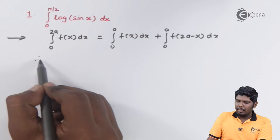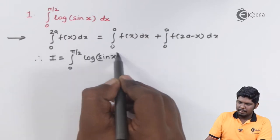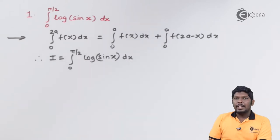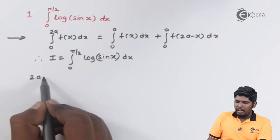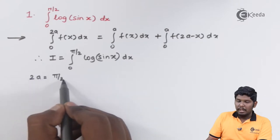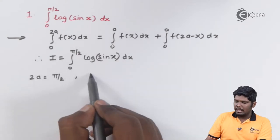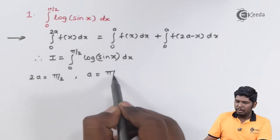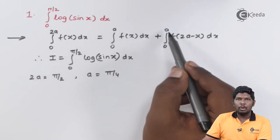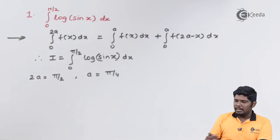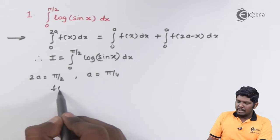Let us consider the given integral as I. As you can see, 2a is replaced by pi by 2, meaning the value of 2a is pi by 2. On the right-hand side we need 0 to a, so solving this gives a = pi by 4. We can therefore split this integral as 0 to pi by 4 in both parts.